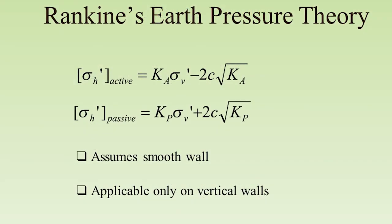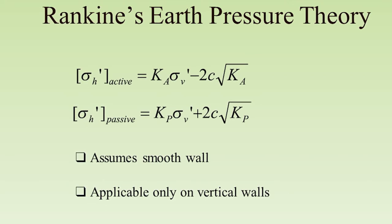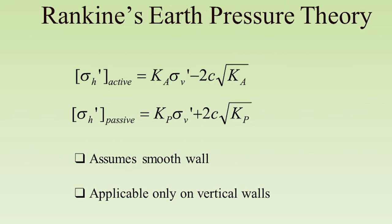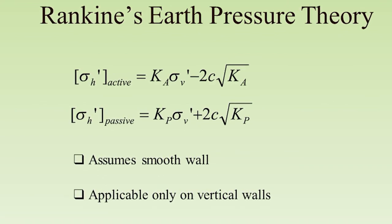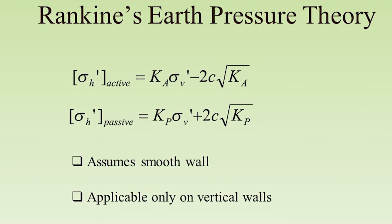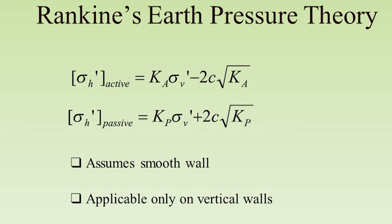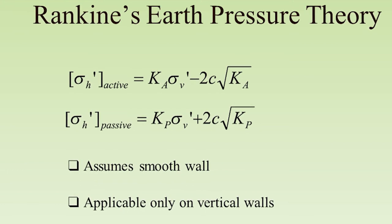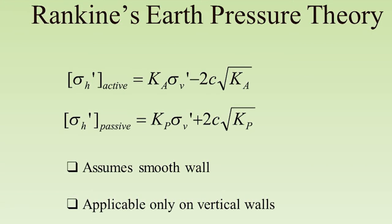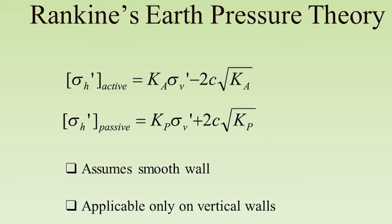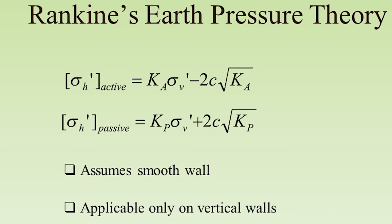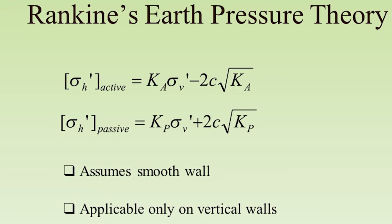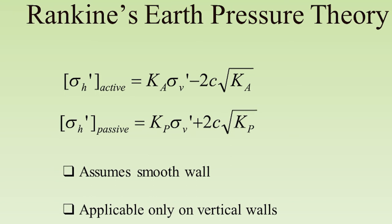Rankine's theory of earth pressure assumes a smooth wall — meaning there is no friction between the soil and the wall. The equations for sigma H dash (active) equal to Ka times sigma V dash are applicable only to vertical walls.